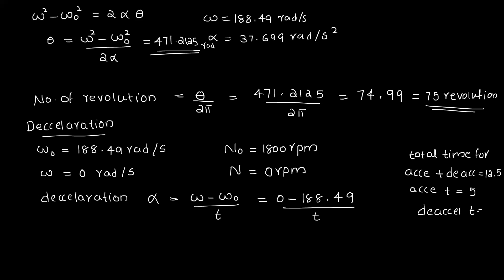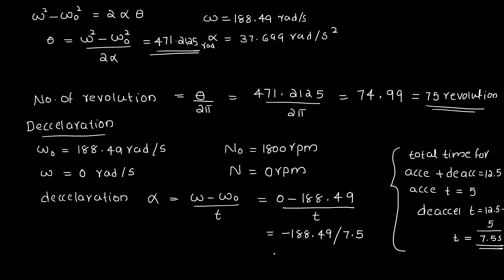The deceleration time t equals 12.5 minus 5, which is 7.5 seconds. Therefore, alpha equals minus 188.49 divided by 7.5, giving minus 25.132 radians per second squared.